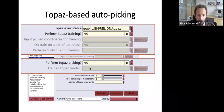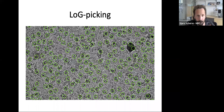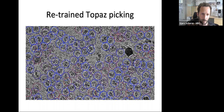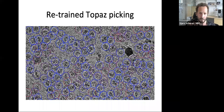Just to show results for the beta-gal tutorial: this shows the default Laplacian of Gaussian picking — basically blob-based picking — where you see false positives in high-contrast features. This shows results from Topaz picking, colored from blue (most likely a particle) to purple (less likely). You can play with the threshold using the right mouse button in the manual picking visualization. How useful this will be depends on the project at hand.